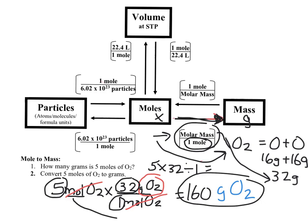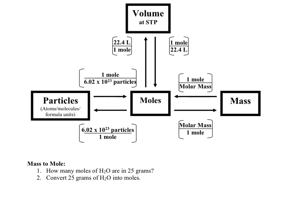Molar mass is just the mass in grams from the periodic table — you plug that in top or bottom depending on which arrow you're using. Our next problem: how many moles of H2O are in 25 grams? Another way to say that is: convert 25 grams into moles. Either phrasing is really asking us to do the same exact thing.